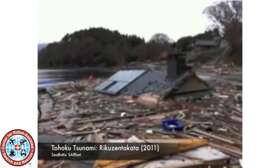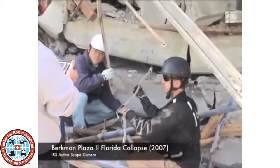Most of the focus of USAR teams is still on locating human lives in mines, building collapses, or wilderness. Lately, however, as was the case of the Fukushima disaster in Japan, we have seen robots used to also evaluate the overall safety of damaged power plants.